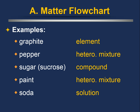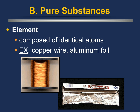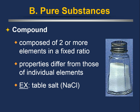Soda water is a solution — you have water with carbon dioxide added; they don't chemically combine, just physically combined. Copper wire and aluminum foil are examples of pure elemental substances — just copper and aluminum atoms. A compound is composed of two or more elements in a fixed ratio, with properties that differ from those of its individual elements. For example, sodium by itself and chlorine by itself have very different characteristics alone compared to when combined into sodium chloride (table salt).